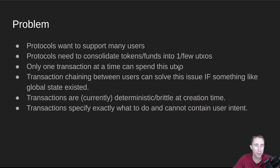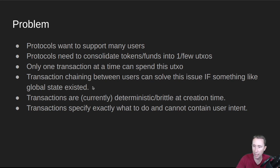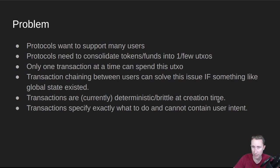Only one transaction can spend a UTXO at a time. On other chains, you can do chaining, or in account-based models it doesn't matter because there's a global state. If somebody did a swap and my transaction could nicely chain onto their outputs, that could solve the issue. Transactions are currently very deterministic and brittle at creation time — anybody can come in and spend any UTXO in my transaction before me, making it invalid. Transactions specify exactly what to do and can't really contain the user's intent regardless of which UTXOs are picked.